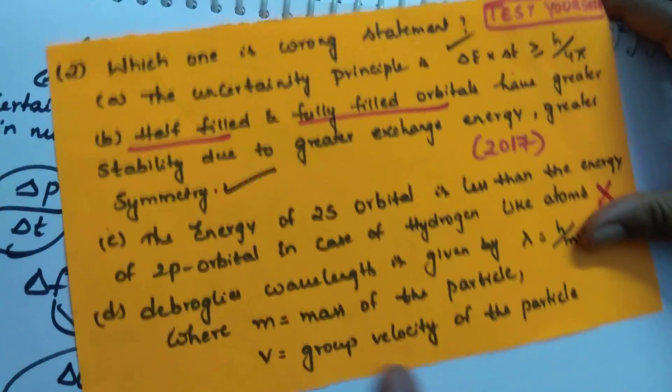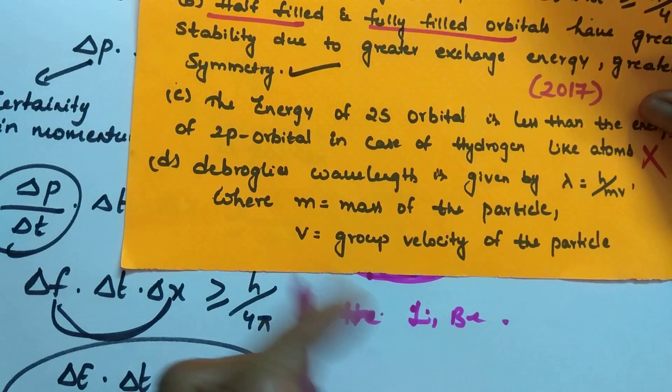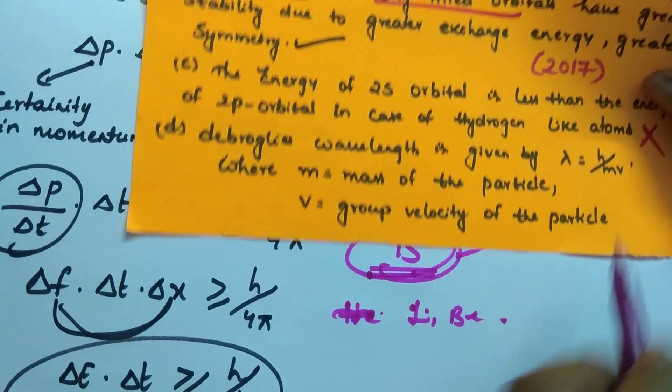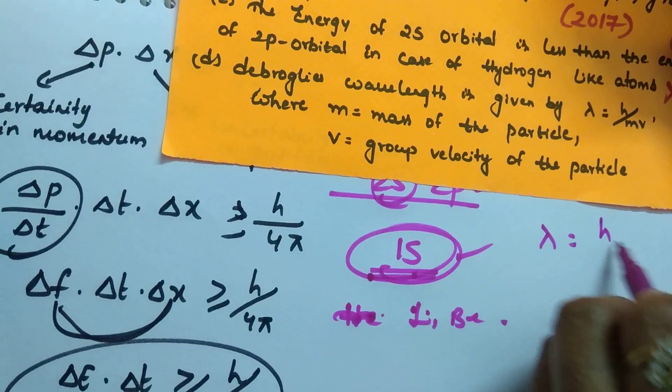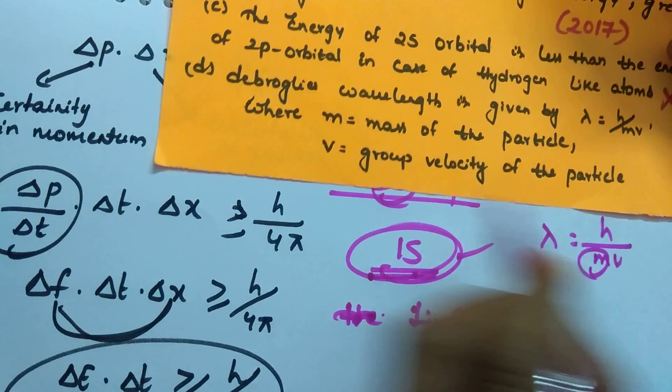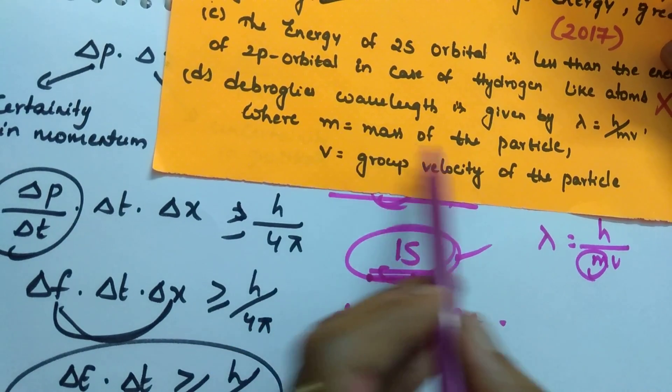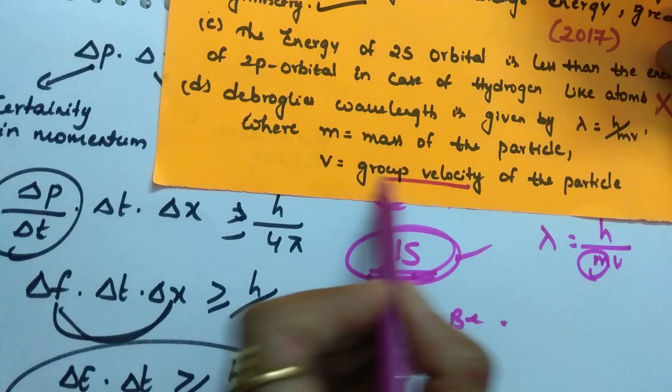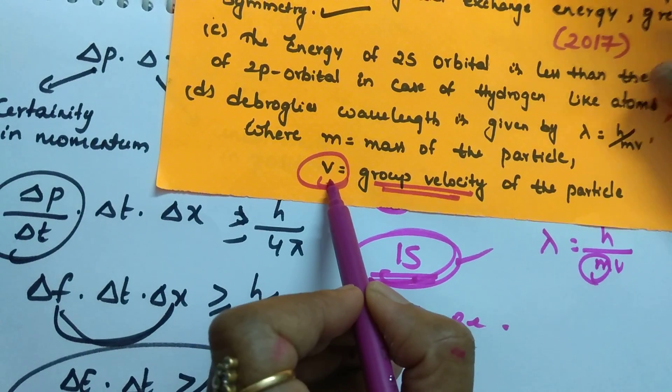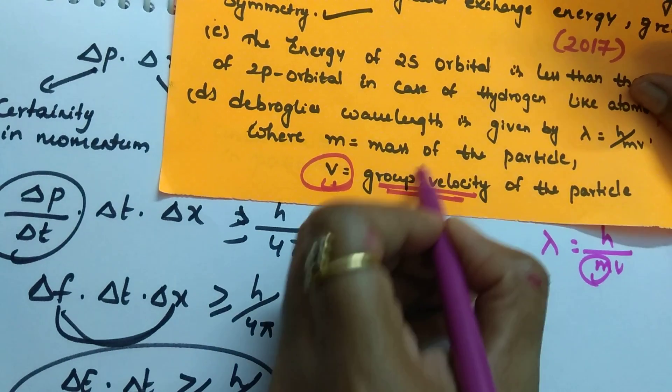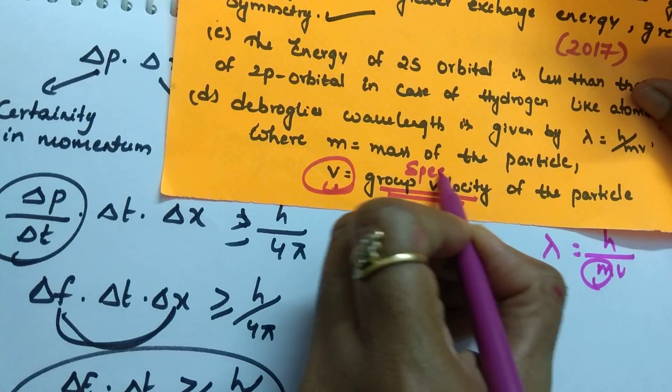Coming to, see this question. They gave this option to confuse you. De Broglie wavelength is given by lambda equal to H by MV. Where, H is Planck's constant and M is mass of the particle. And, what is this group velocity you think and you feel this is the wrong option. But, group velocity is nothing but the speed of the particle which is traveling. So, this is also correct option.